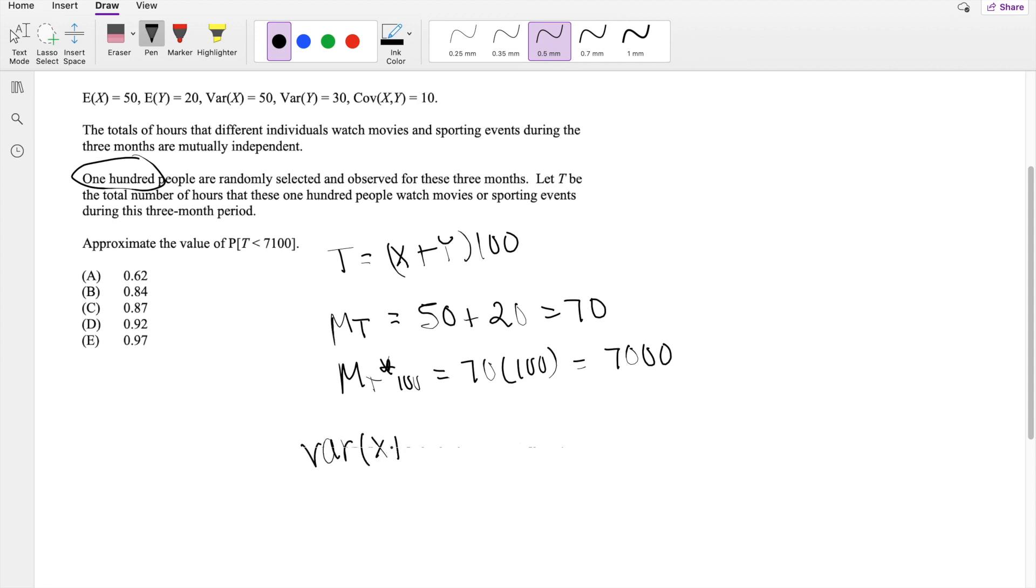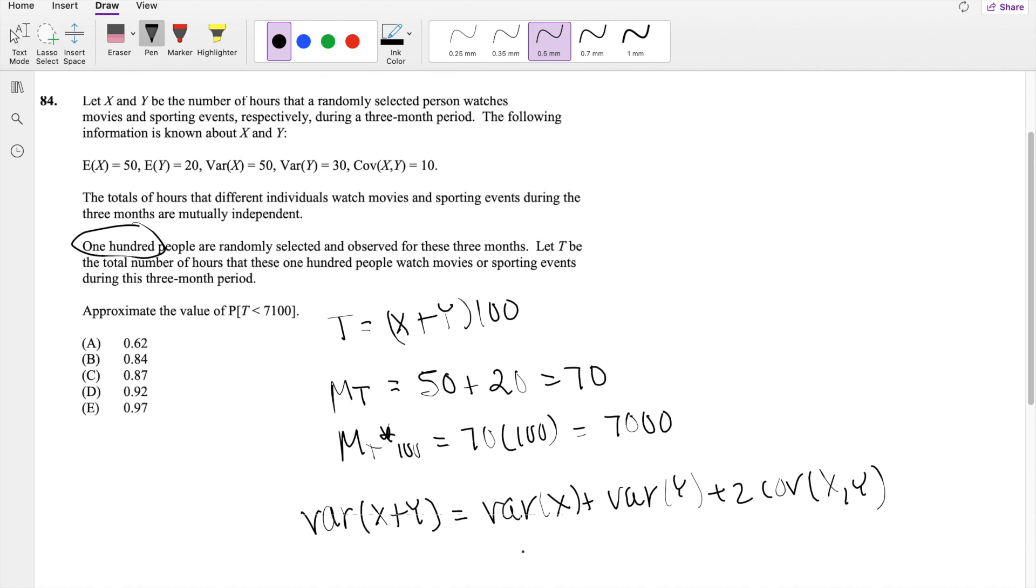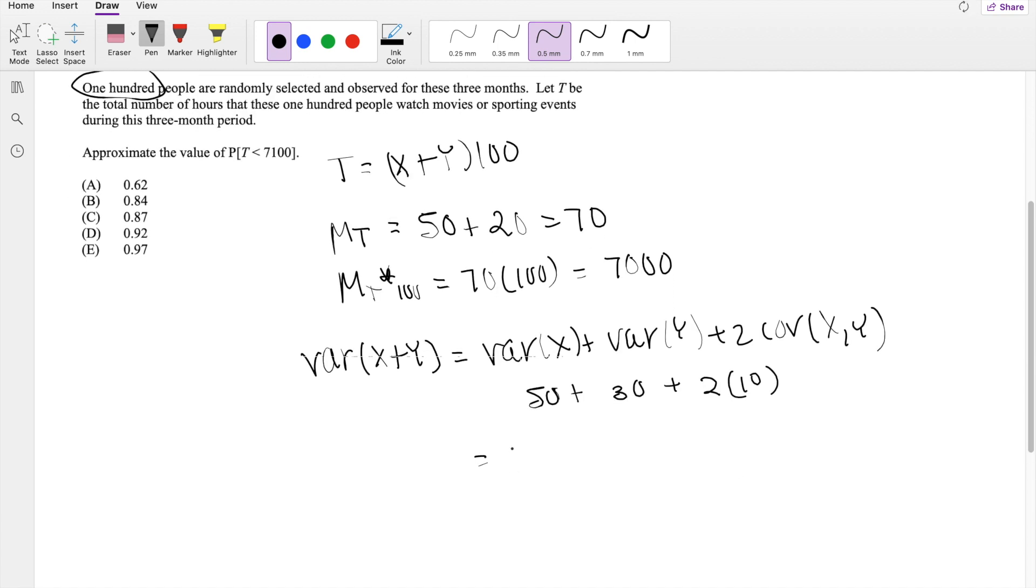but we do know that variance of X plus Y is equal to the variance of X plus the variance of Y, plus the 2 times the covariance of X and Y. So we don't know what variance of, oh yes we do. Variance of X is 50, variance of Y is 30, and then 2 times covariance, which is 2 times 10. So this is equal to 100.